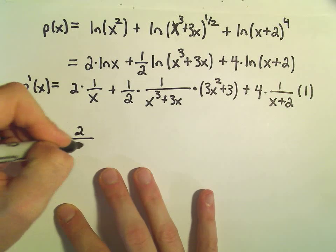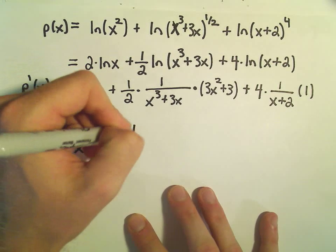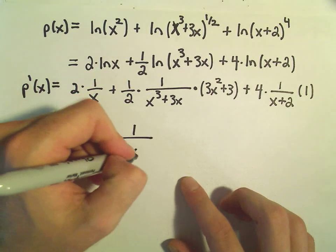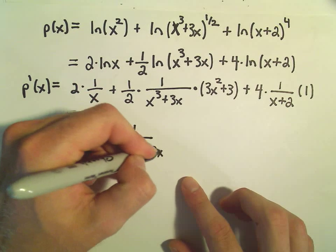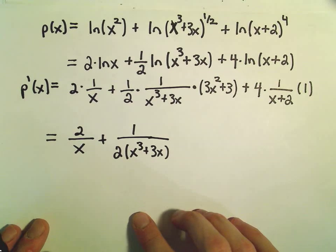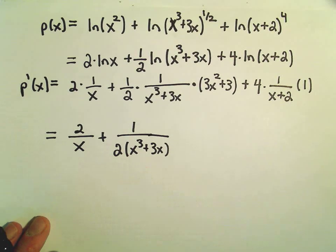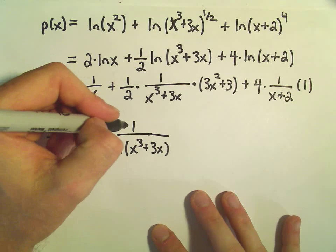So I'm going to rewrite this as 2 over x plus 1 over, make sure you use parentheses here, x cubed plus 3x. Because if you wanted to not use parentheses, you'd have to distribute out the 2.